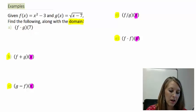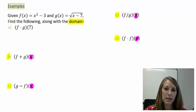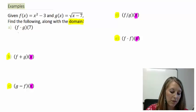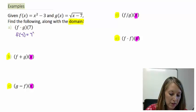I'm going to do exactly what we did in the last example. I'm going to figure out what f of 7 is, which is 7 squared minus 3, or 49 minus 3, which gives me 46.